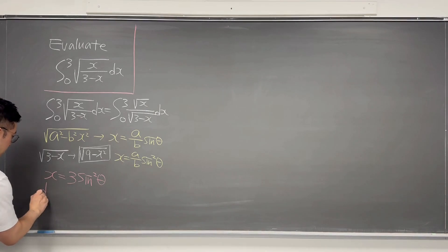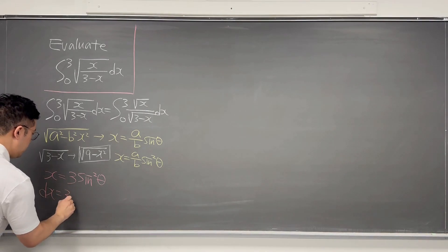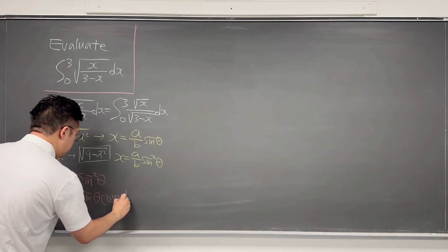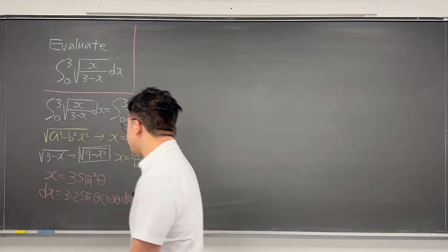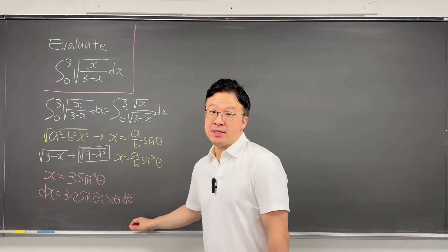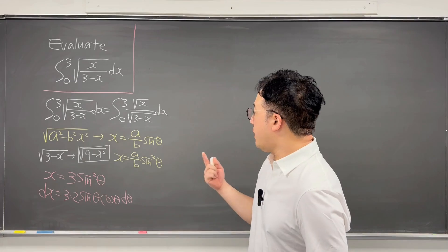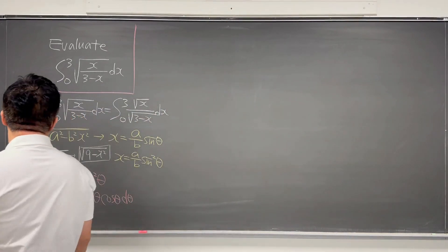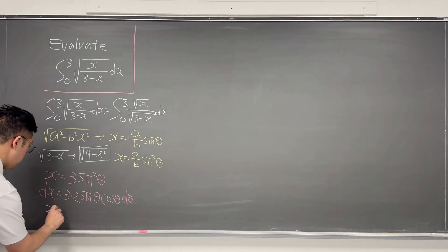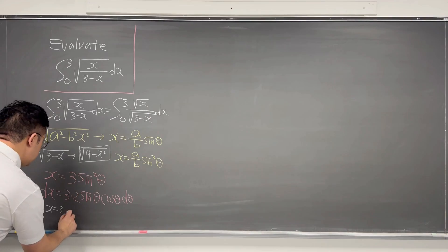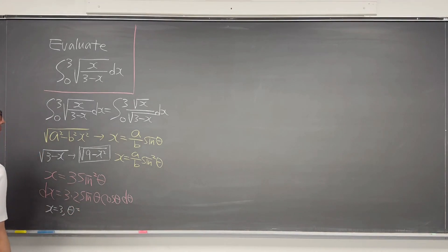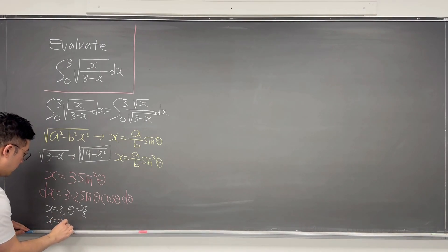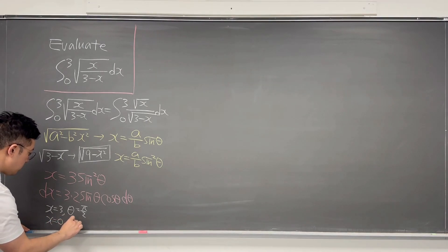Then we can easily say dx is equal to 3 times 2 times sine theta times cosine theta, d theta. Since we're working on a definite integral, the lower bound and the upper bound should be changed. The upper bound: when x equals 3, then theta should be pi over 2. And the lower bound: when x equals 0, then theta is also equal to 0.